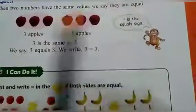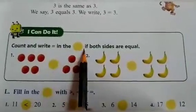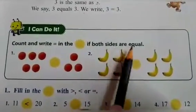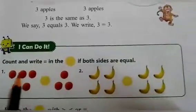This is the sign of equal. I can do it. Count and write = in if both the sides are equal.